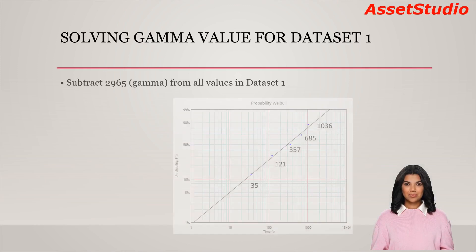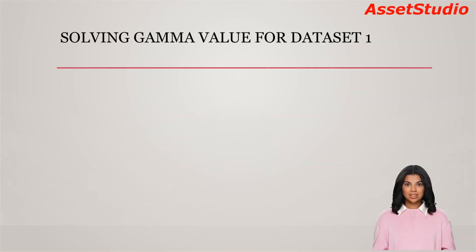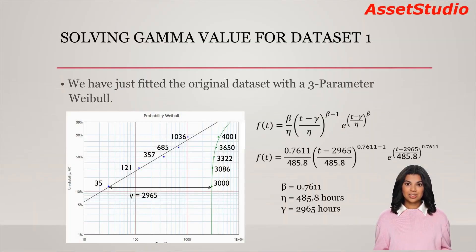By reducing the times-to-failure values in the dataset by an appropriate constant, that is gamma, we can remove the curvature. Let's subtract 2965 from all the values in dataset 1. Now we plot these adjusted points on the probability Weibull graph. The curvature is not visible anymore. The gamma value is 2965 hours.